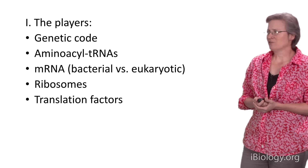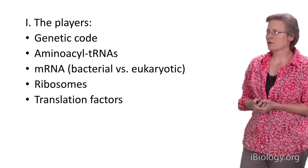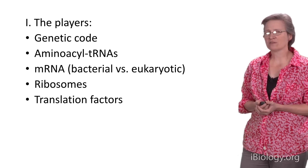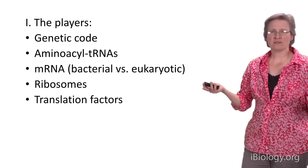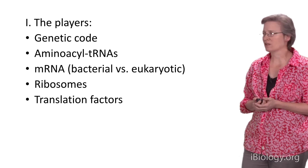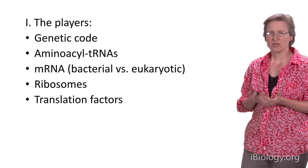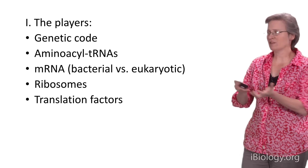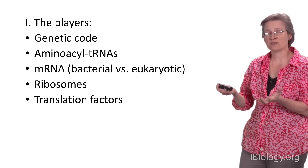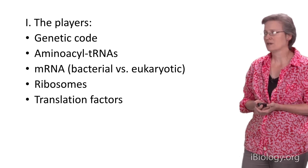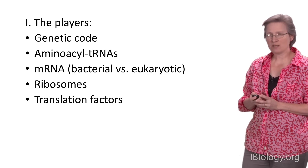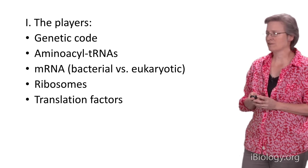The players we're going to focus on first: we'll start with the genetic code, then the adapters known as aminoacyl tRNAs, the messenger RNA template — the copy of double-stranded DNA that encodes the genetic information — and we'll discuss these in both the bacterial and eukaryotic domains of life. Then we'll talk about the catalyst of this event, the ribosome, and finally about the many factors that facilitate this event.